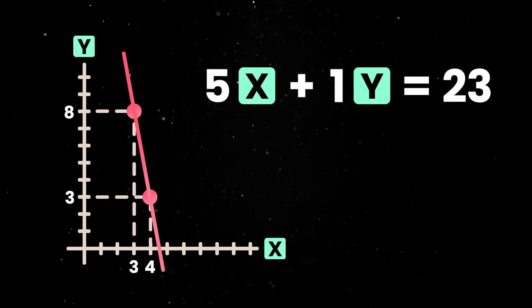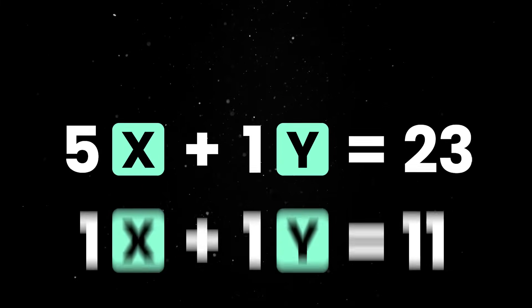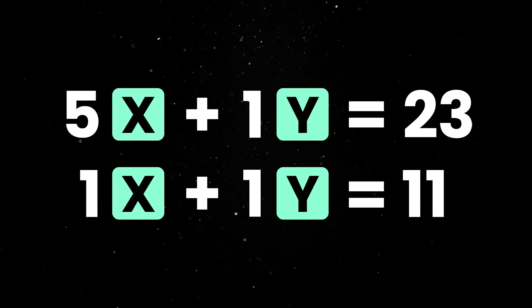But things get much more interesting than this. The trouble starts when you're not just trying to reach one total, but two at the same time. Let's say now you also want the total number of coins to be exactly 11.